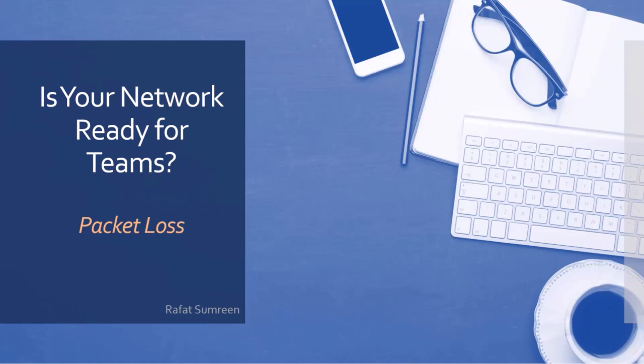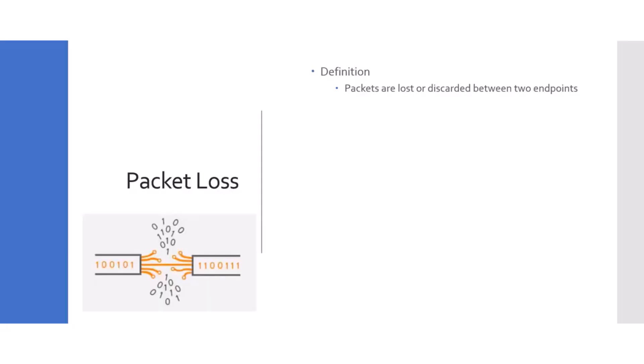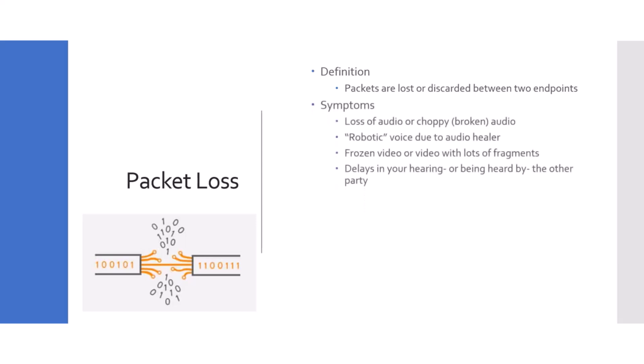Is your network ready for Teams? In this session I will talk about packet loss. The definition of packet loss is when packets are lost or discarded between two endpoints — between the sender and the receiver. So the sender sends the packets, the receiver does not get the packets, or the other way around. From the Teams standpoint, the symptoms are loss of audio, choppy or broken audio, robotic voice.